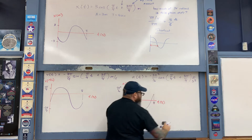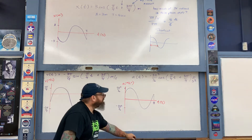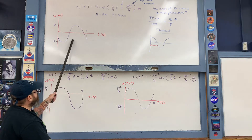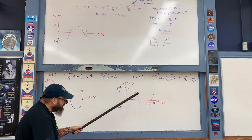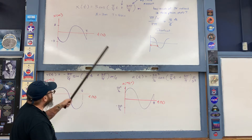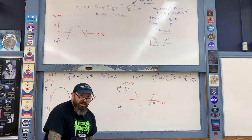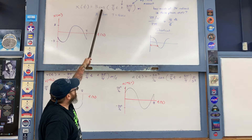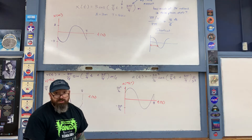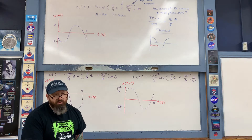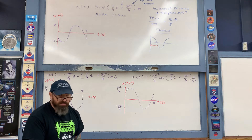You can pause here and check yourself: compare the position graph to the acceleration graph. Notice that the acceleration is just the negative of the position. This is because the position is a cosine curve and the acceleration is a negative cosine curve, so the two graphs will always be negatives of each other regardless of the phase shift.